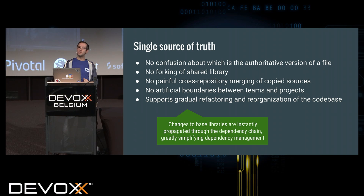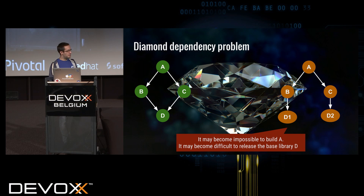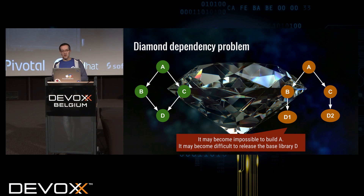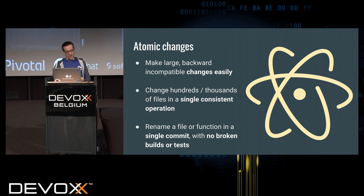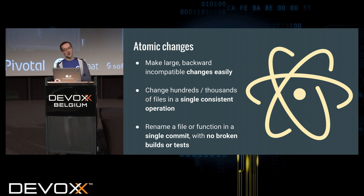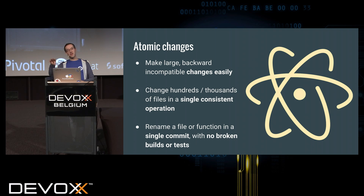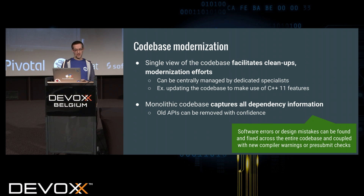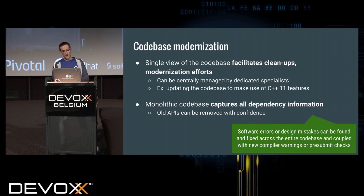It also helps with dependencies, because you always depend on the very latest version of a project or dependency and you don't have different dependency versions — no 'it works with dependency D1 but not D2.' Also, although it's a huge repository, changes are atomic. When you do large refactorings with Rosie, it's done atomically across the whole codebase. It's also great for when you want to refactor things — for example, adding new Java 8 features or new C++ language features, so you can progressively refactor the codebase and add those enhancements.